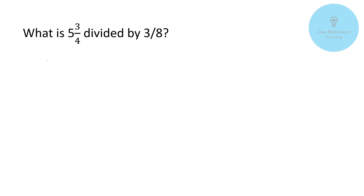We've got one final example and it's a little trickier because it involves that mixed fraction we spoke about earlier. We've got five and three quarters divided by three eighths. The first thing we need to do is change the mixed fraction into an improper or top-heavy fraction. To do that, we multiply the whole number by the denominator: five times four gives us 20.